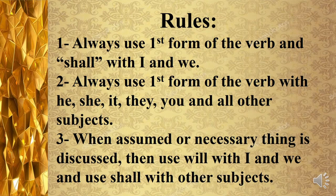Now we will discuss the rules of making future indefinite tense. Rule 1: Always use shall and first form of the verb with I and we. Rule 2: Always use will and first form of the verb with he, she, it, they, you, and all other subjects. Rule 3: When an assumed or necessary thing is discussed, use will with I and we, and use shall with other subjects.